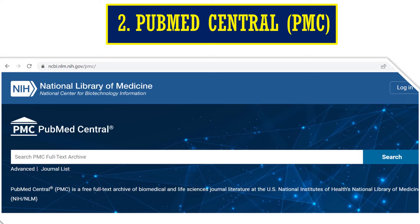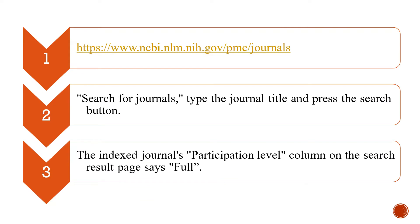Let's see the second one, that is PubMed Central PMC. We need to go to www.ncbi.nlm.nih.gov. The homepage will come and here you can see the search button. What we need to do is in the search box, we need to search for the journals — type the journal title and press the search button. Once we press search, the indexed journals' participation level column on the search result page will say Full, or it will show all journals with the similar name.